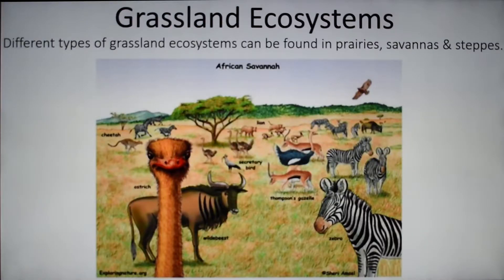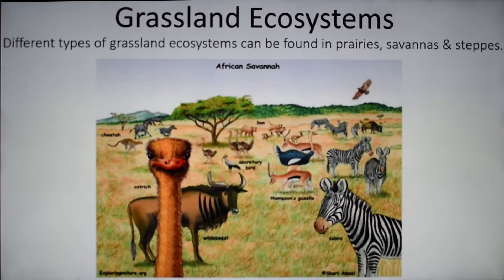The next type of ecosystem is the grassland ecosystem. There are different types: we've got the prairie, the savanna, and the steppe. The one in the picture here is a savanna ecosystem. You typically find those in places like Africa, and look at all those cool organisms that live there.